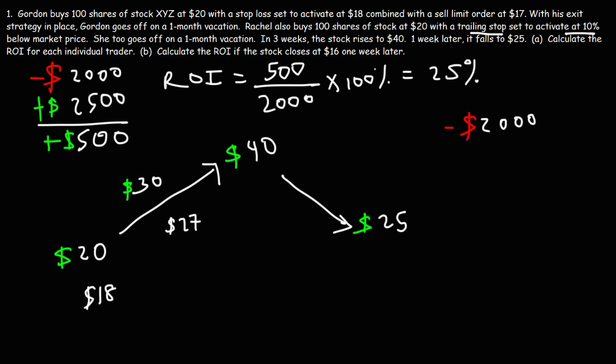Now as the stock moves to $40, the trailing stop also moves. It follows the stock as it goes up. 10% of $40 is $4. So the trailing stop will activate $4 below $40, or $36. The beauty of the trailing stop feature is that it only moves as the price of the stock moves up. It never moves down.